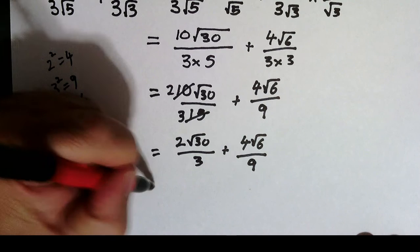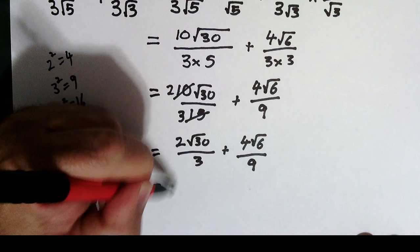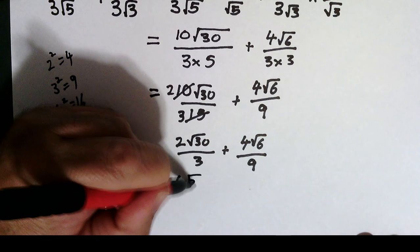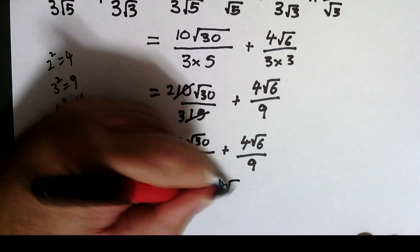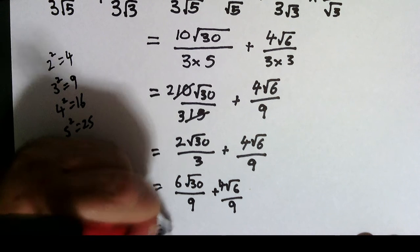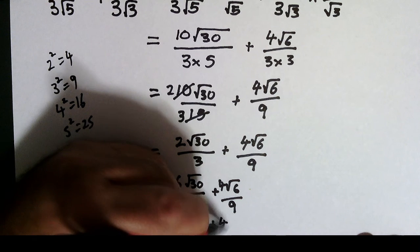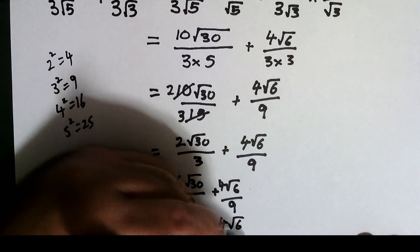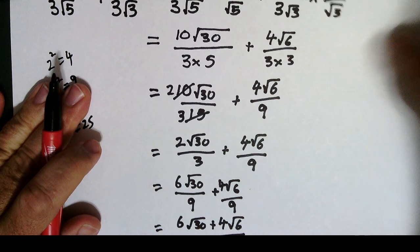So I've got, I'm going to multiply above and below by 3. So multiplying 2 by 3, I'll get 6 root 30 over 9 plus 4 root 6 over 9. Well, that gives me 6 root 30 plus 4 root 6 over 9.